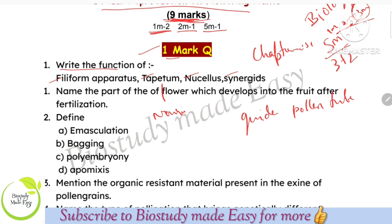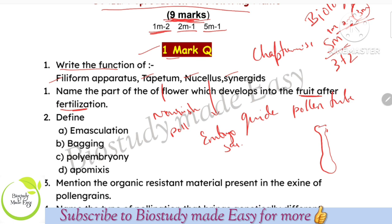Tapetum provides nourishment to pollen grains. Nucellus provides nourishment to the embryo sac. Name the part of flower which develops into fruit after fertilization — this is the female pistil part, specifically the ovary. So ovary develops into fruit. These are important one-mark MCQ fill-in-the-blank questions.